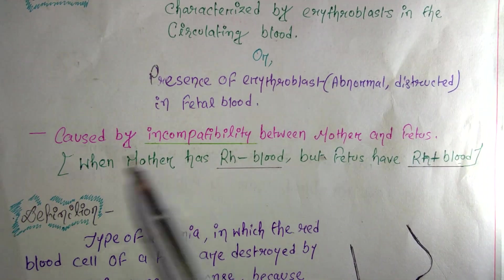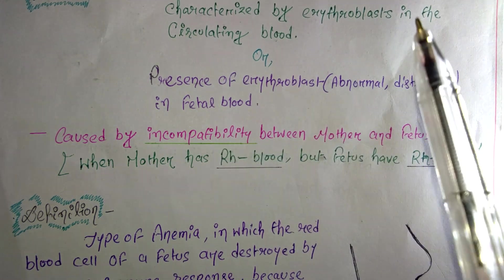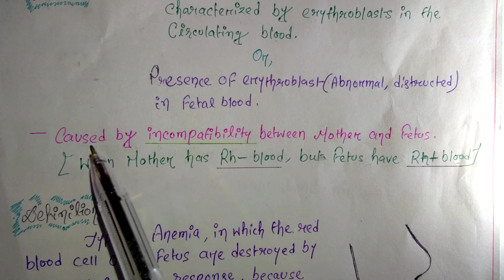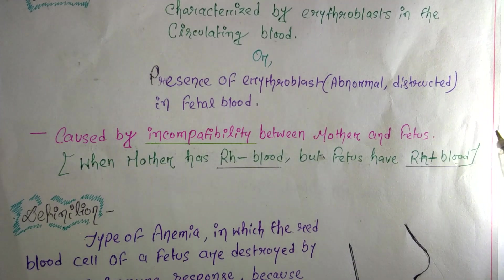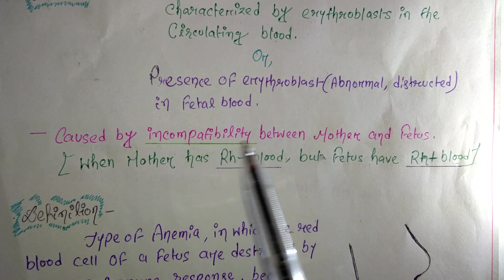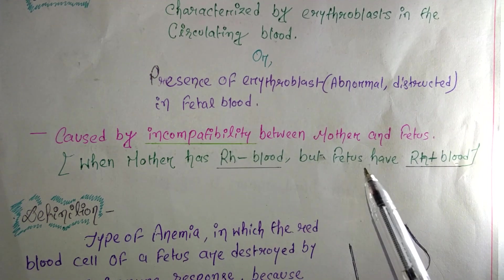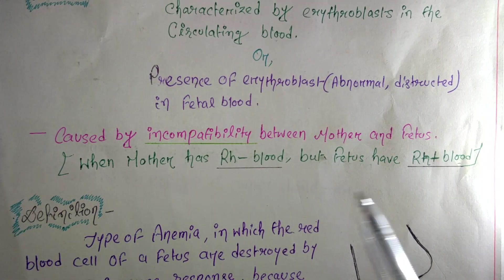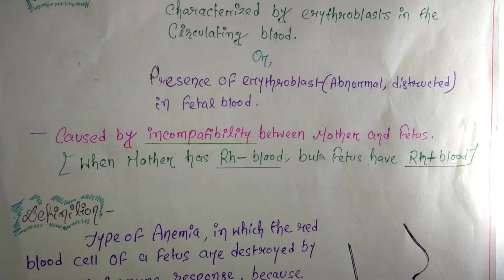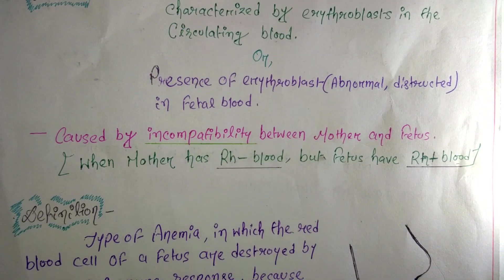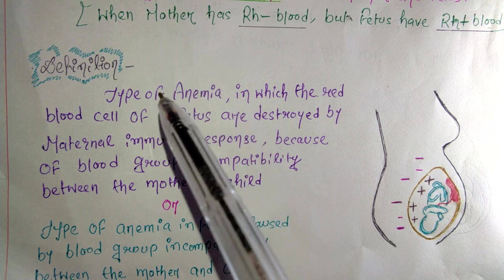This condition — erythroblastosis fetalis, also called RH incompatibility — is caused by incompatibility between the mother's and fetus's blood. Specifically, when the mother has RH negative blood and the fetus has RH positive blood.